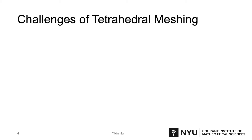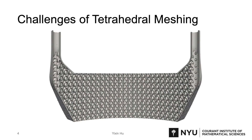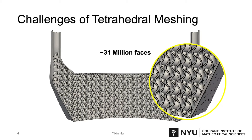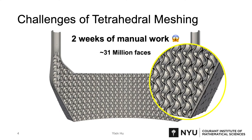One of the main reasons is the input surface in the real world is not perfect. Like the example shown here, this is a triangle surface mesh that consists of around 31 million faces. If we zoom in, we can see the surface is full of self-intersections. Believe it or not, this model takes around two weeks of manual work to clean it up in its current pipeline. Note that it's really common to introduce artifacts on the surface during the design procedure. So a robust tetrahedral mesh algorithm should be able to handle imperfect real-world input.